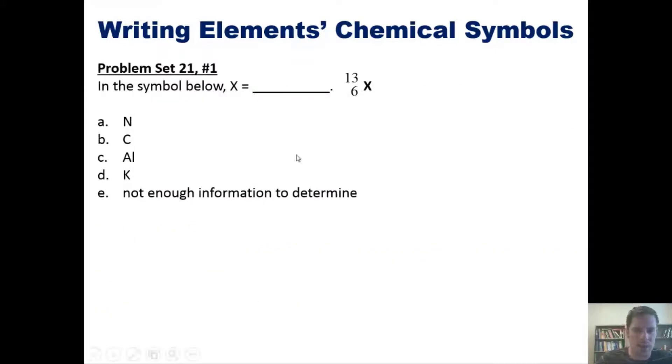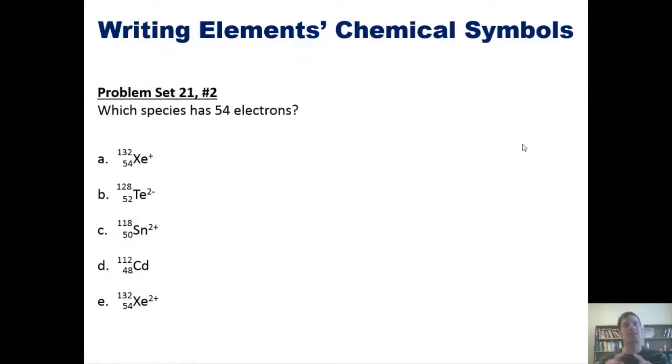Here's another one from this chapter. In the symbol shown, this X with a 13 and a 6, X is which element? Next, which species has 16 protons? And next, which species has 54 electrons? That's pretty much it.